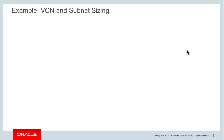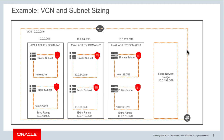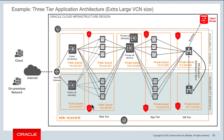Continuing with the same VCN and subnet sizing principles: with a VCN CIDR of 10.0.0.0/16, it is divided into three /18s for each availability domain, with the fourth range as a spare for future growth. Within each AD, divide between private and public subnet ranges, and keep a /20 as an extra range so that for future growth in that particular AD you have additional IP ranges available.